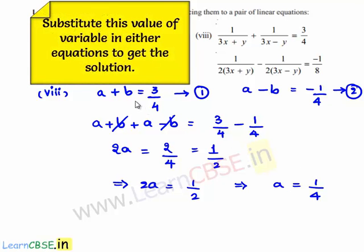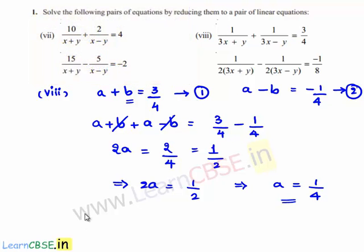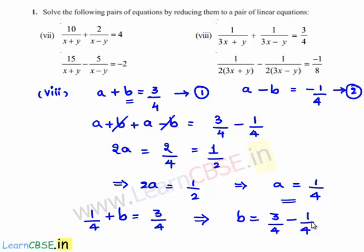To find b, substitute a = 1/4 into equation 1: 1/4 + b = 3/4. This gives b = 3/4 - 1/4 = 2/4 = 1/2. So we found a = 1/4 and b = 1/2.